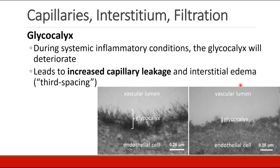When patients are experiencing systemic inflammatory conditions like sepsis, for example, the glycocalyx will deteriorate. Here's a healthy glycocalyx on the left and a destroyed glycocalyx on the right.